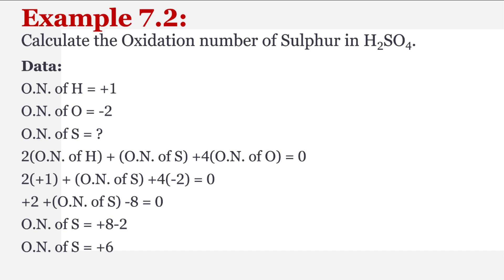Sub ki values put karna hai — oxidation number of hydrogen ki bhi, oxidation number of oxygen ki bhi. Values put karo aur uske baad isko simply solve karo. Simple calculation hai. Toh oxidation number of sulfur is equal to plus six.